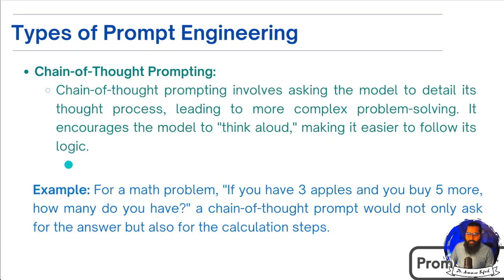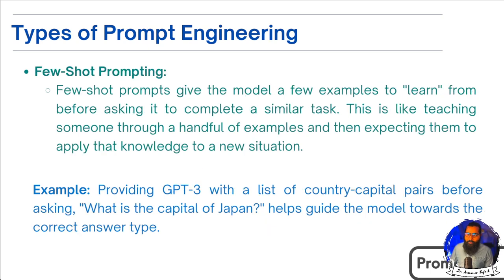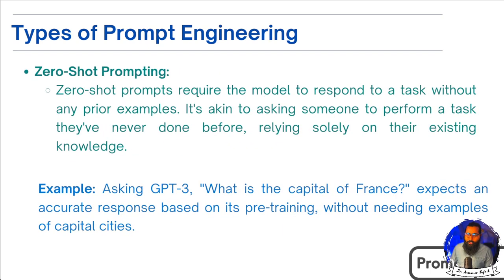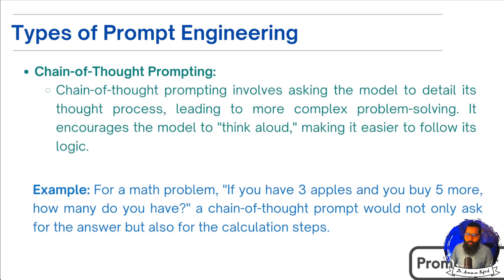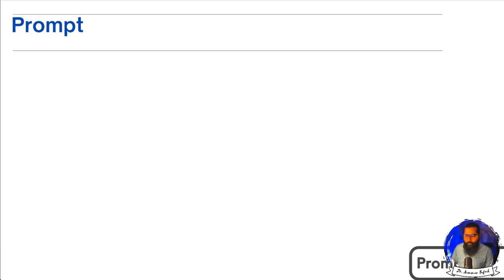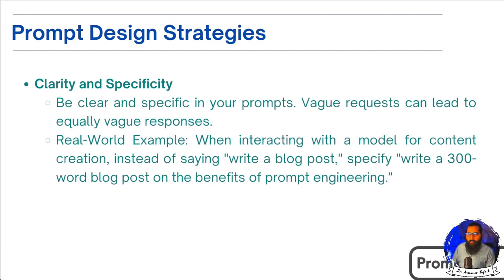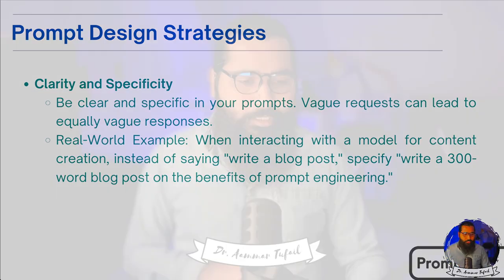Now, here is a small assignment: you have to list the types of prompt engineering. Write in the comment section the three types: Zero-Shot, Few-Shot, and Chain-of-Thought Prompting. This way you will also know which types of prompt engineering exist. We have now seen the types of prompts, and next we will see what makes a good prompt.